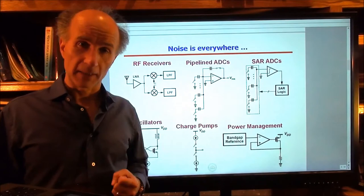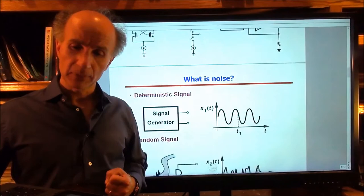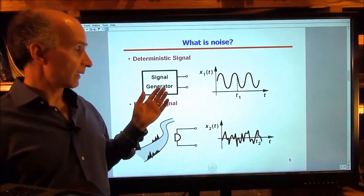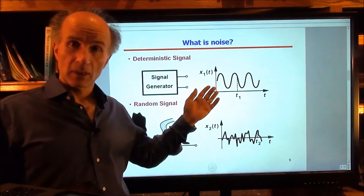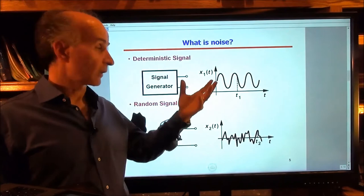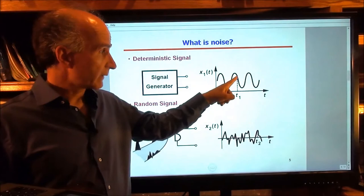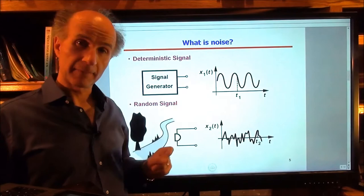As our first step, we have to understand what we mean by noise. Let's start with more familiar signals that are deterministic — for example, periodic signals. If we take a signal generator that produces a sinusoid and look at its output, it's a nice simple waveform that we are used to analyzing. We can incorporate this waveform in circuit analysis easily and predict what the results will be. The value of this voltage at T1 can be predicted from previous values — so it's a deterministic waveform.